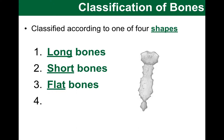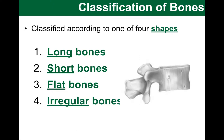Finally, the last group is, in my mind, kind of a scapegoat group. It is called irregular bones, and basically we put there any bones that we cannot fit into other groups. These are complicated shapes, such as the vertebrae and the hip bones.